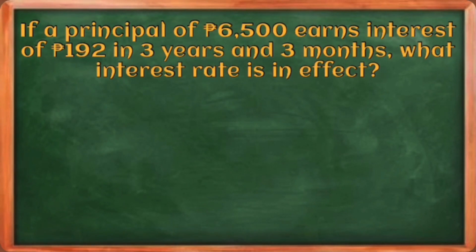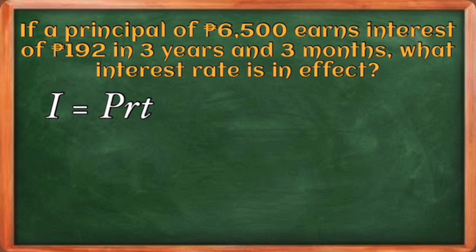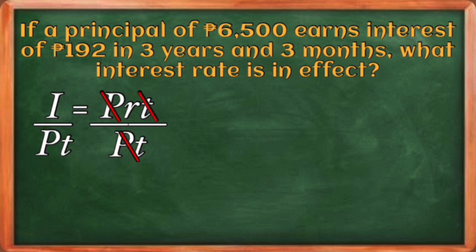Next example: if a principal of 6,500 pesos earns interest of 192 pesos in 3 years and 3 months, what interest rate is in effect? We use I = PRT and derive the rate by dividing both sides by principal and time, canceling P and T. This gives us the formula R = I / (P × T).